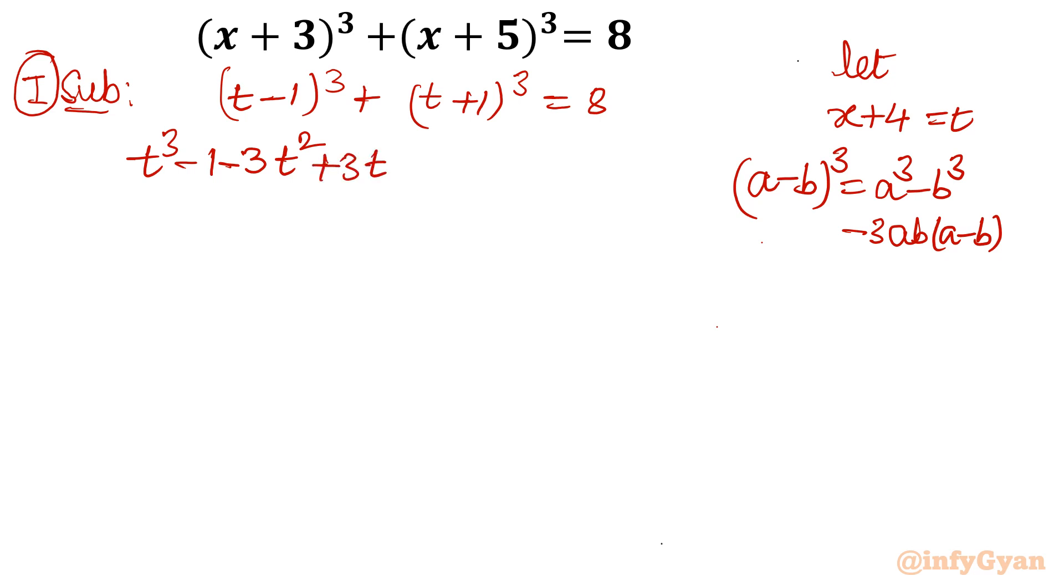Similarly, the second bracket a plus b whole cube. So that will give us t cube plus 1 plus 3t square plus 3t equal to 8.